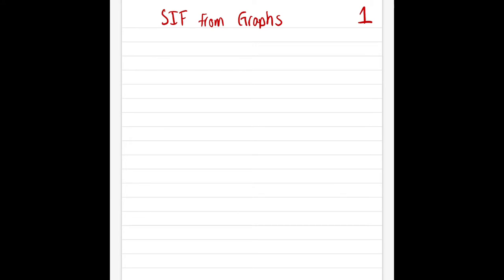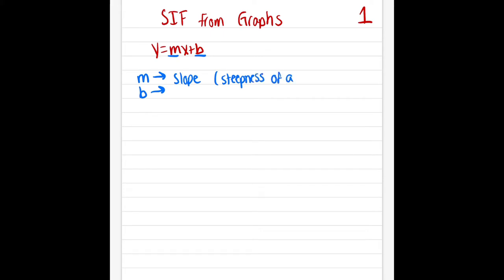Before Christmas break we were talking about slope-intercept form, which is an equation of the form Y equals MX plus B. In a proper slope-intercept form equation, M and B are supposed to be numbers and Y and X stay as variables or letters. We also learned that M represents the slope of a graph, meaning the steepness of a line, and B represents our Y-intercept.